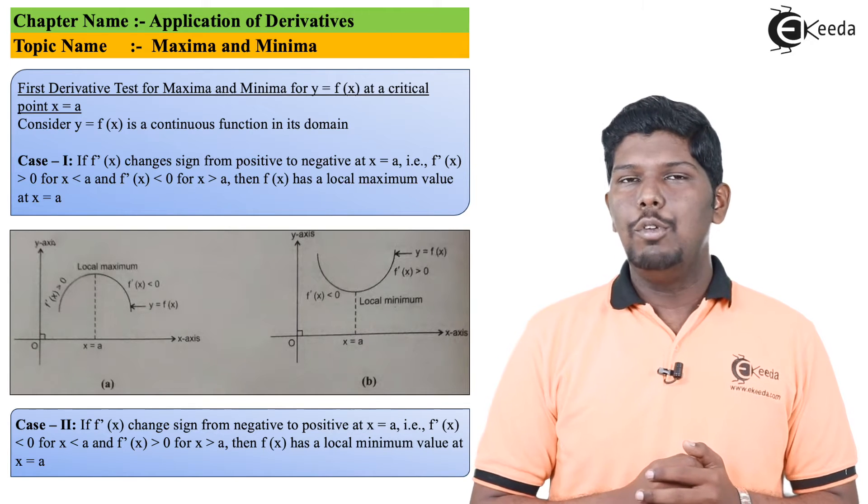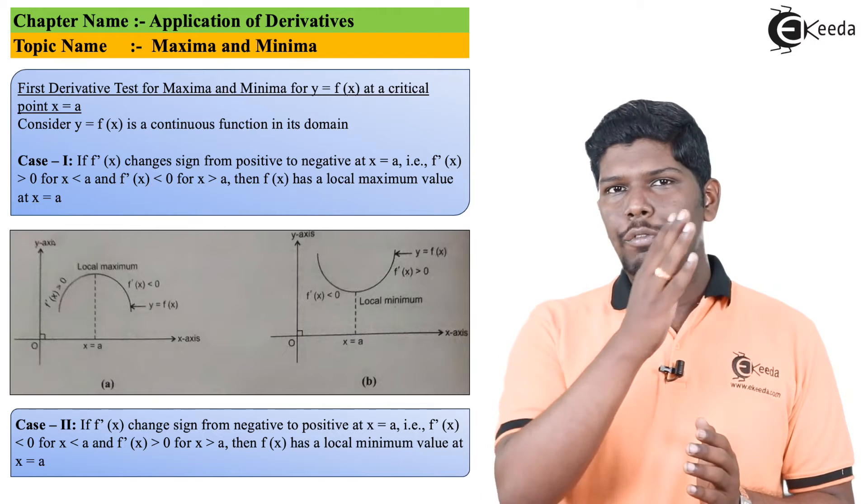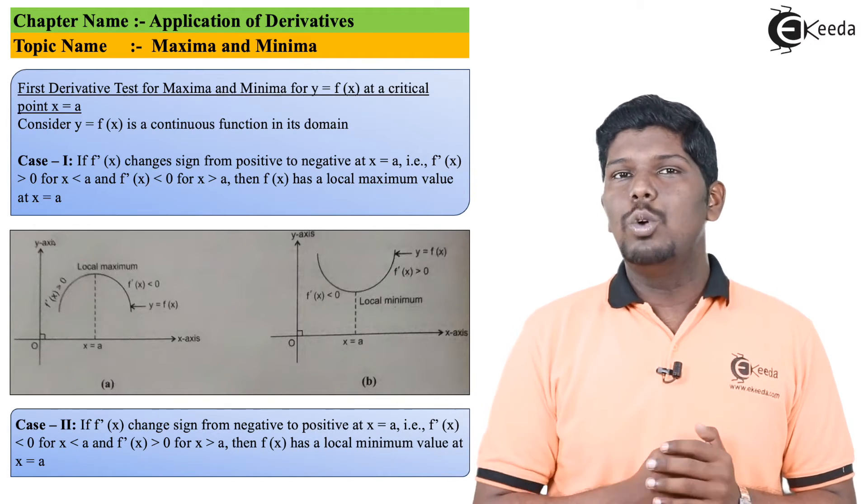Similarly, in the second case, if you see from the left, if you go up to x equals a and if you draw a tangent to each point present on the curve, that slope will be negative.